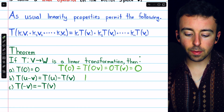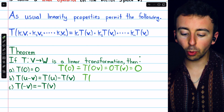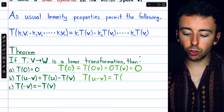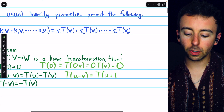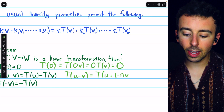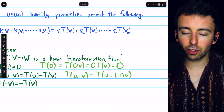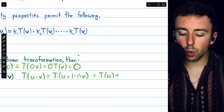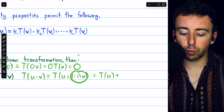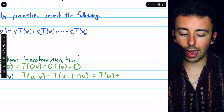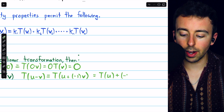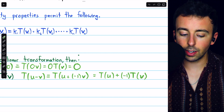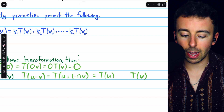We can prove property B by applying the additivity and homogeneity properties. First, split U minus V into U plus negative one times V. Then split the transformation across the addition to get T of U plus T of negative one times V. Taking the negative one out gives T of U plus negative one times the image of V, which is the same as T of U minus T of V.